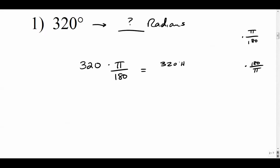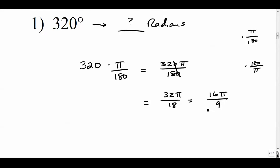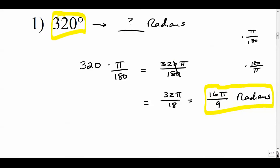Multiplying 320 by pi over 180 gives 320pi over 180. Both have zeros, so simplify to 32pi over 18. Both are still even, so divide by 2: 16pi over 9. That's the answer in radians. Most conversions will give answers in terms of pi. So 320 degrees equals 16pi over 9 radians.